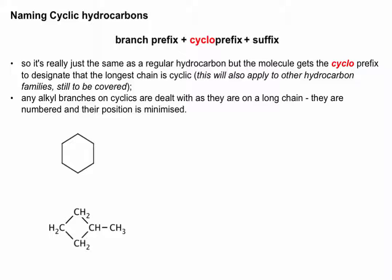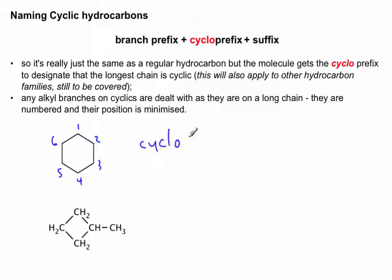Naming a regular hydrocarbon with the prefix 'cyclo' in front, and then any alkyl branches dealt with as alkyl branches. Here's our first example — there's the cyclic hydrocarbon ring structure. I count those carbons in the line structural diagram — it's six. So that is cyclohexane.